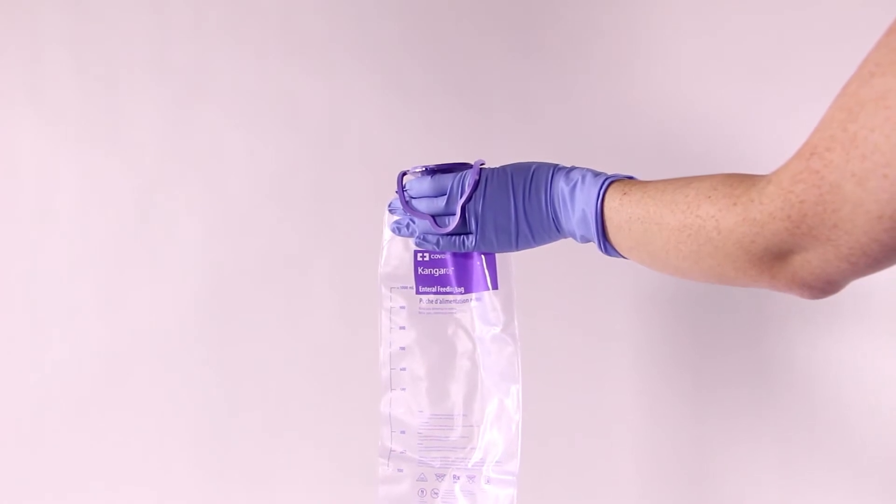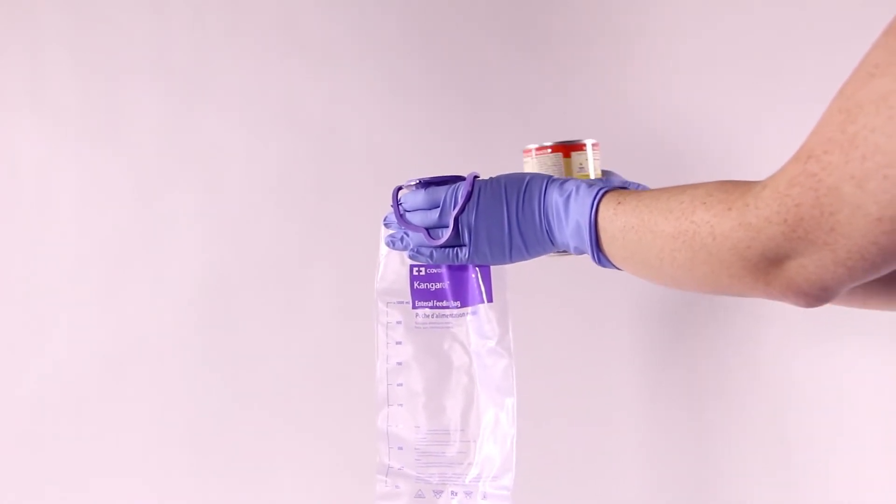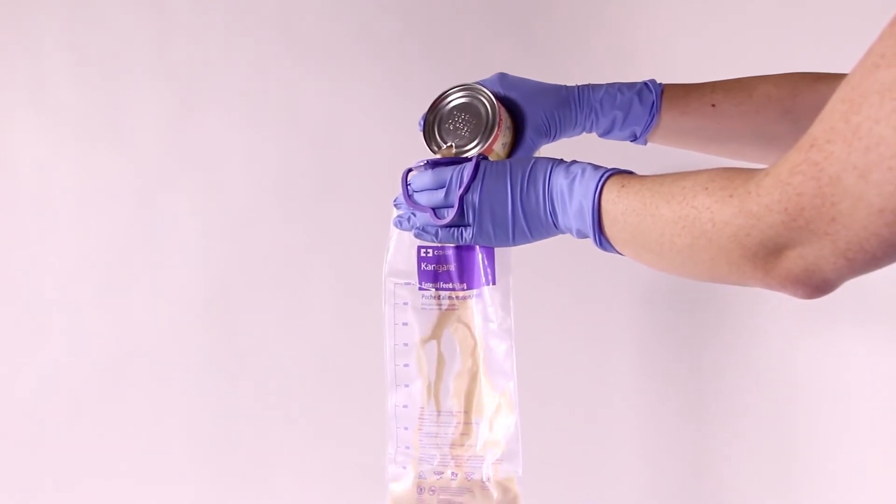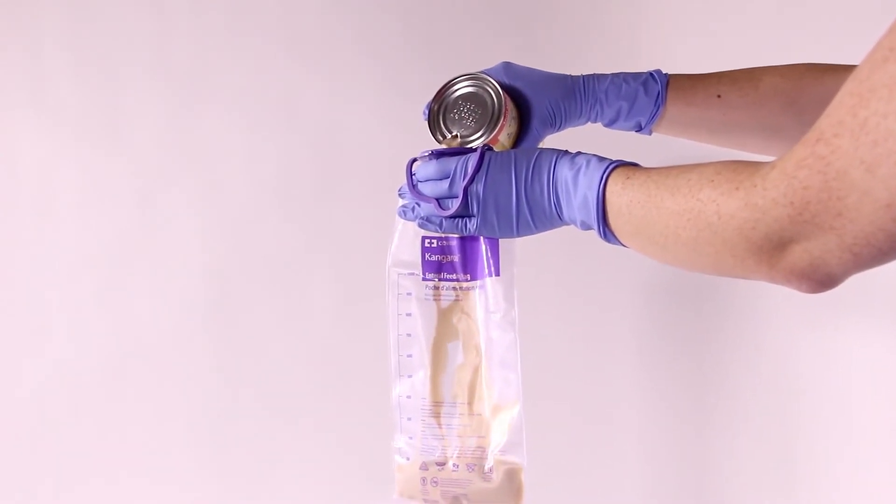The first step of basic pump operation is to prepare and load your feeding set. To prepare your feeding set, simply fill the feeding bag or spike the feeding container per your standard procedure.